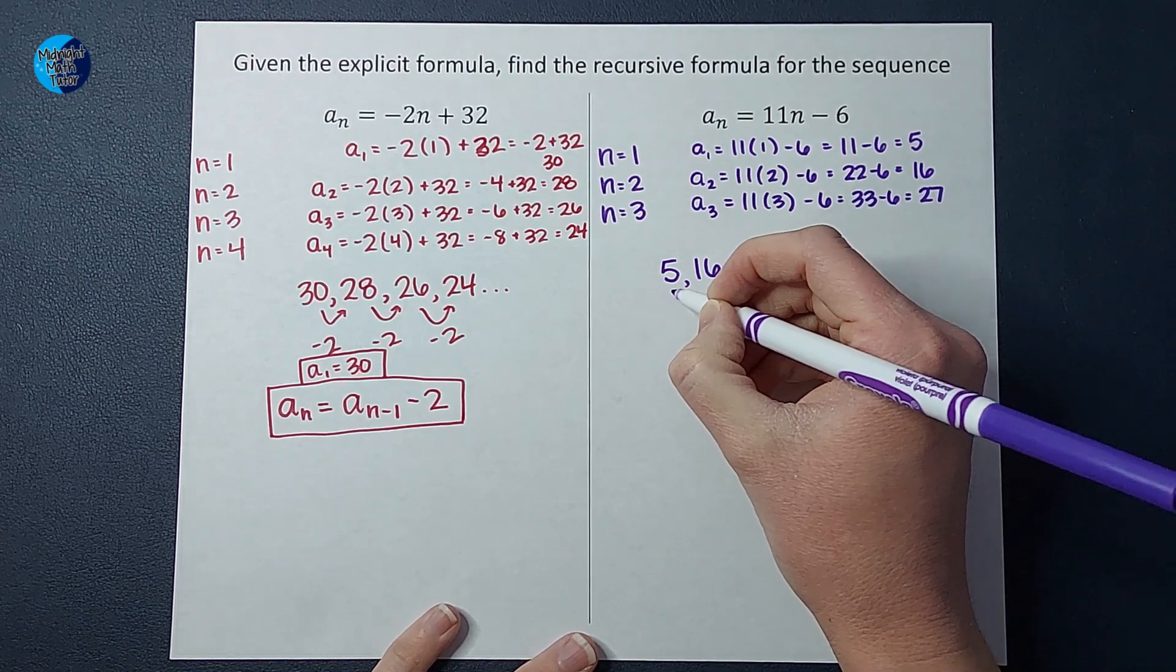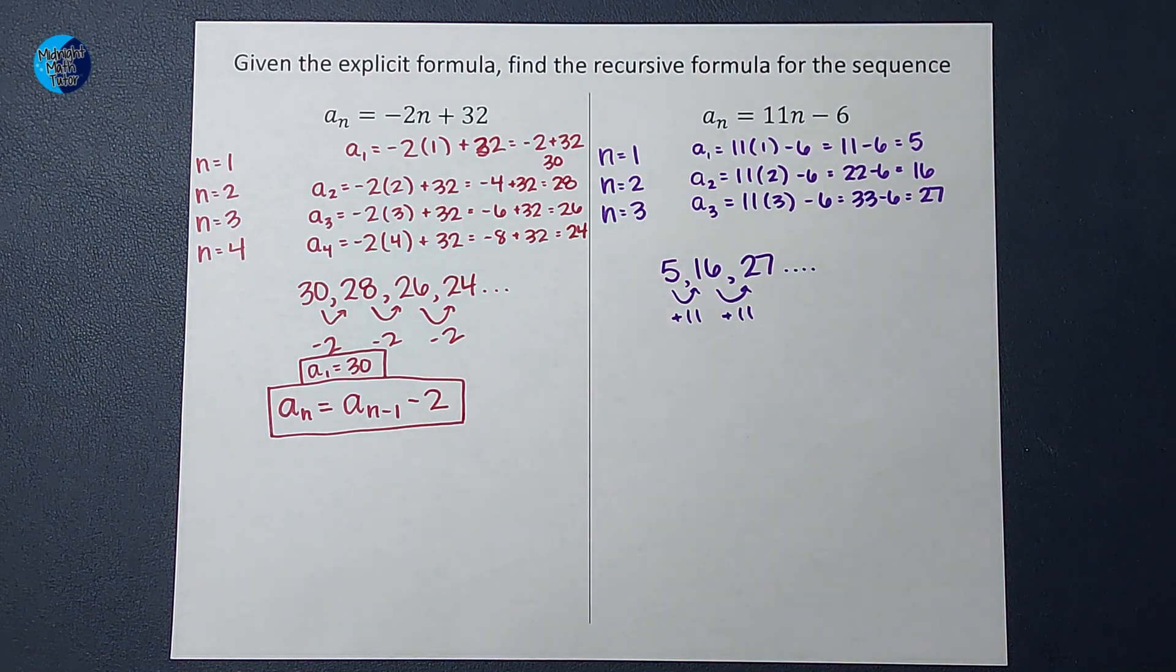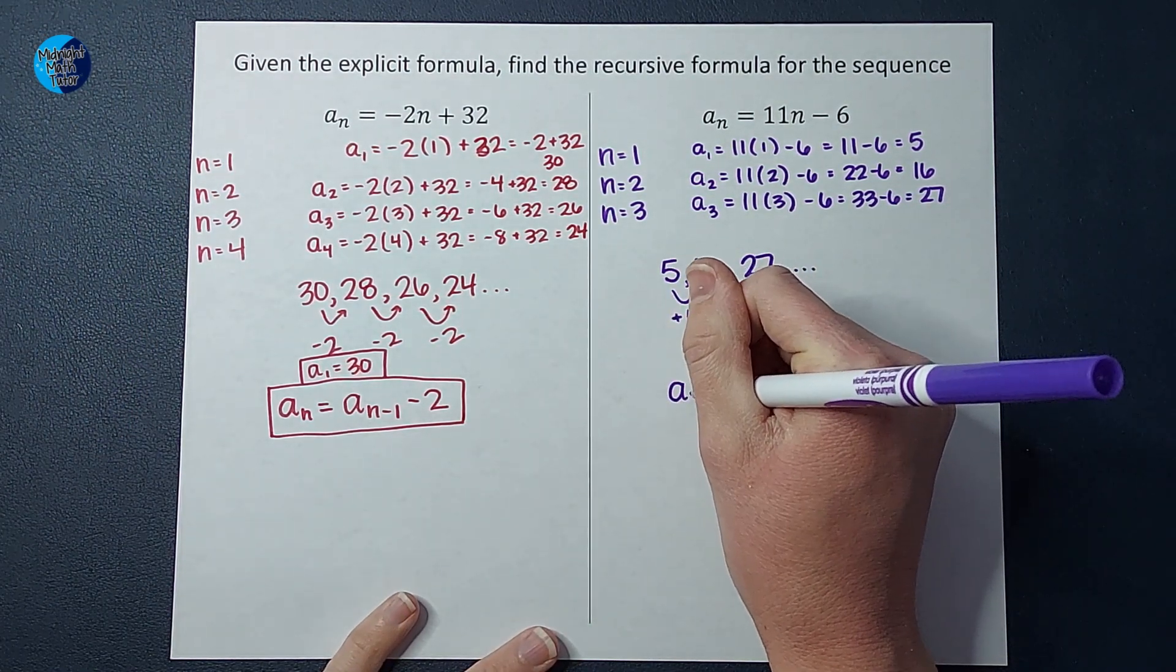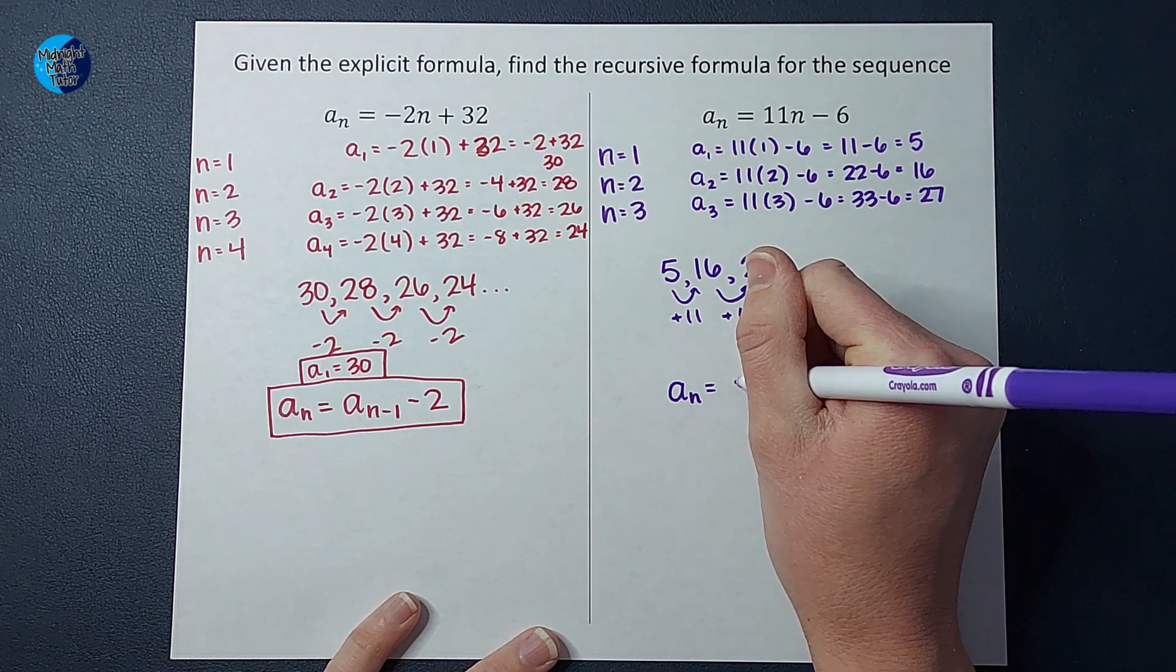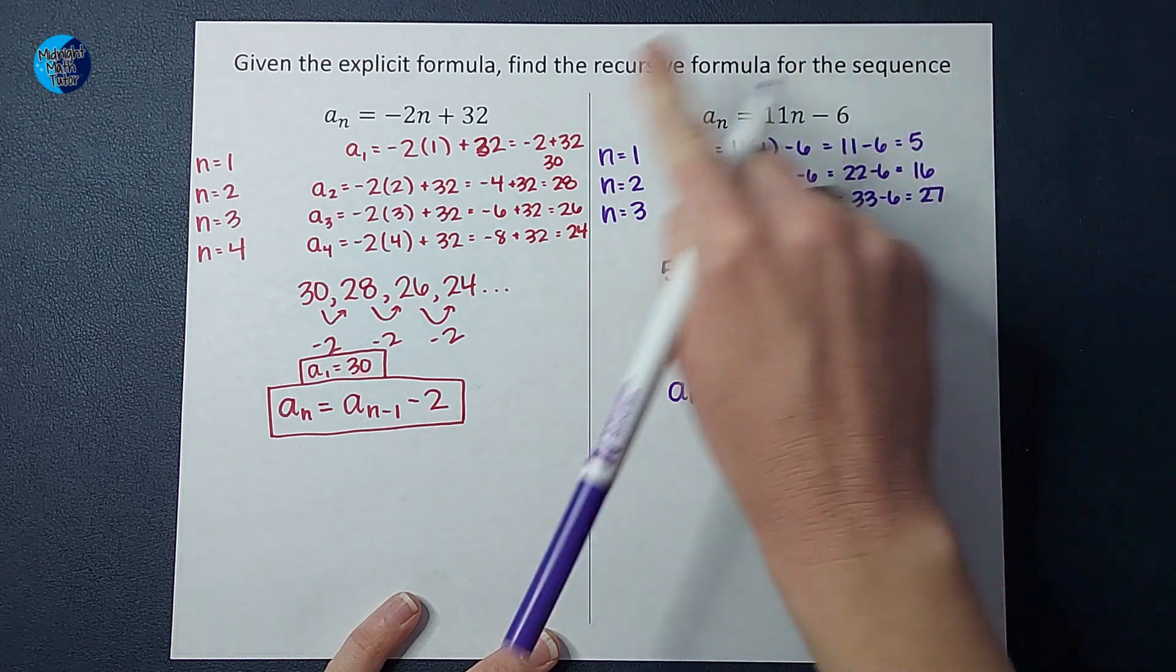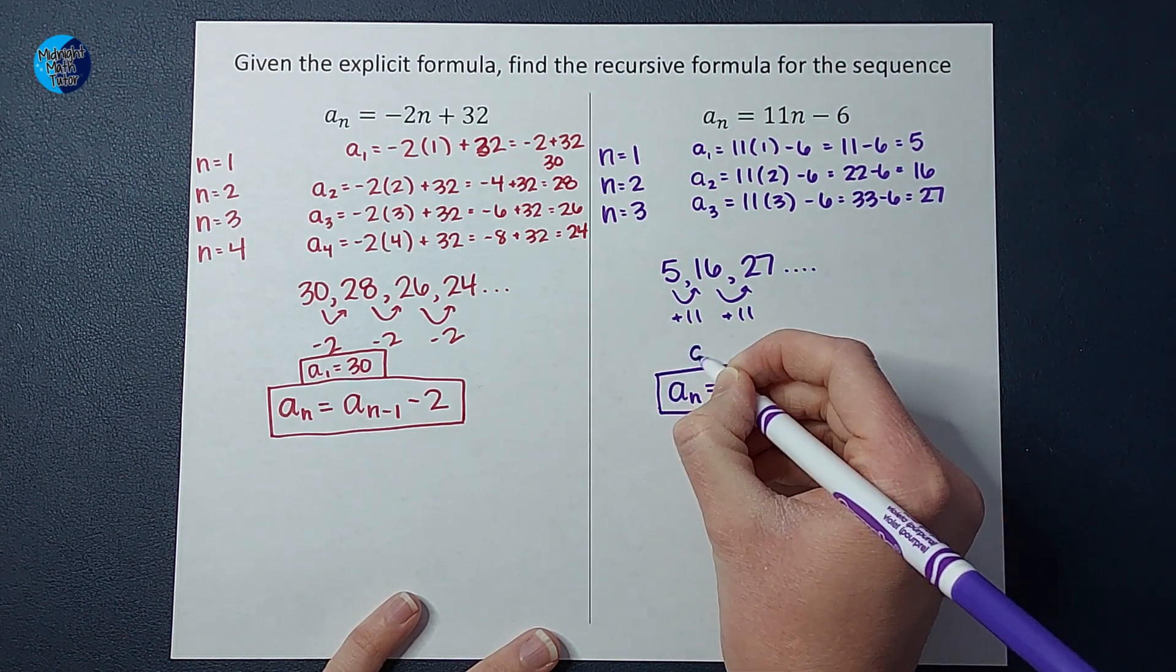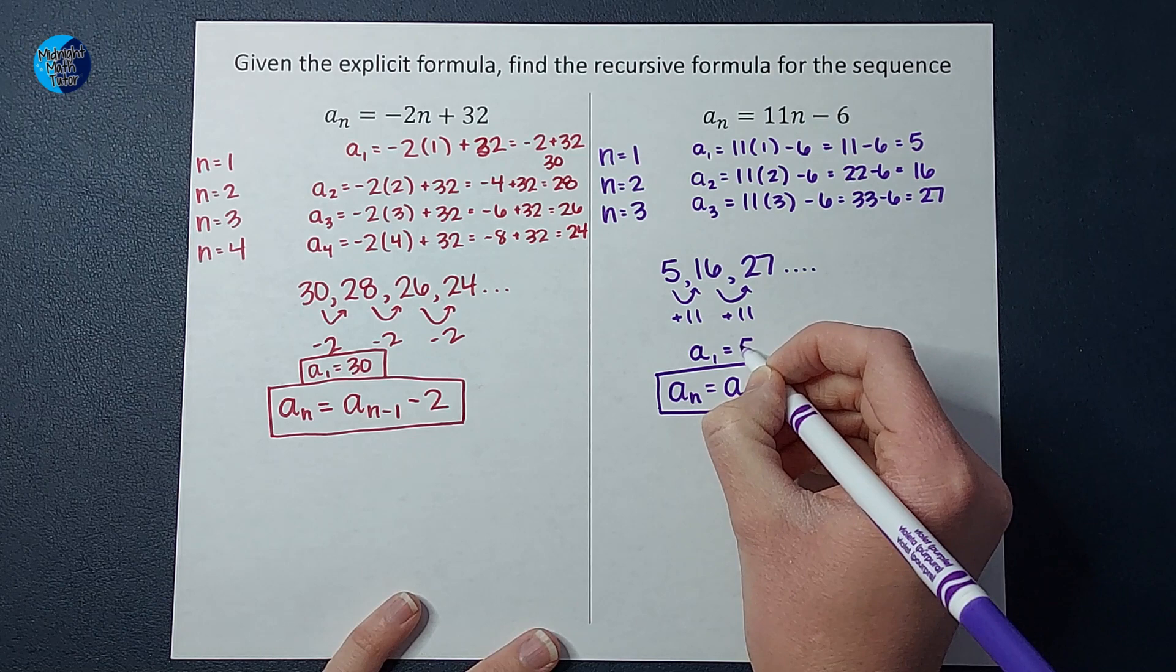So what are we doing each time? Well, we are adding 11 each time. So how do I write whatever number you want to find? Take the one before and add 11, how do I write that in math terms? I say, whatever number you want to find, a sub n, meaning you plug in whatever you want for n. That is equal to the number before it, a sub n minus one, plus 11. Okay, that is my recursive formula. And we always with recursive formulas want to say what our first term is. And in this case, we figured out it was five.